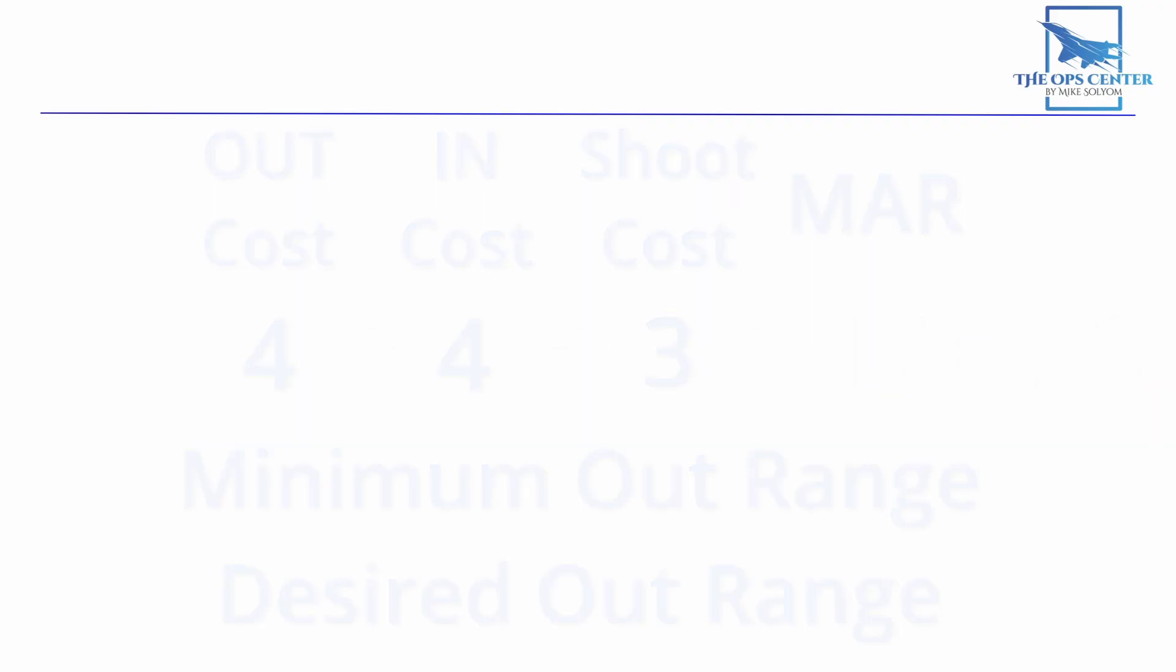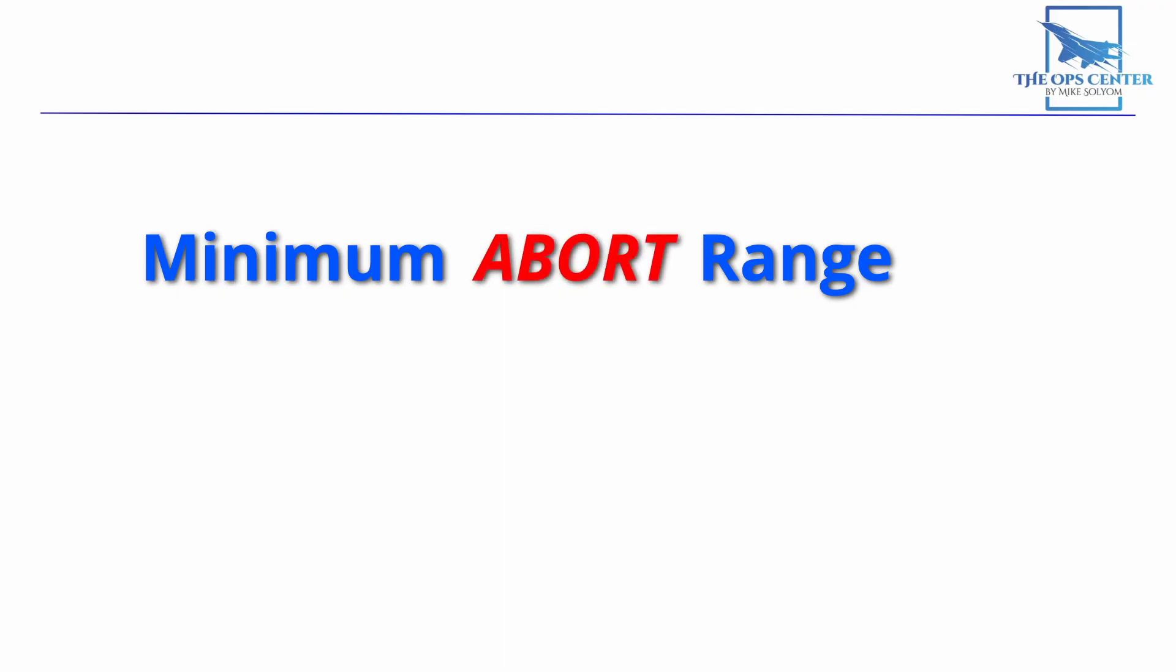Here's an easy way to remember what the two ranges mean. When you reach MAR, the only option besides entering the enemy's weapon range is to abort your attack and run. So that's your abort range. But where you really want to do your OUT is your OUT range.